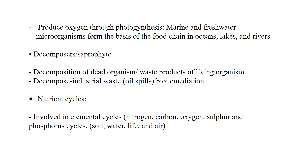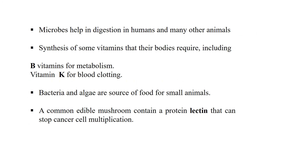Microorganisms help in nutrient cycles: the carbon cycle, phosphorus cycle, sulfur cycle, and nitrogen cycle. These elemental cycles — carbon, nitrogen, oxygen, sulfur, and phosphorus — circulate through soil, water, life, and air. Microorganisms play a key role in these nutrient cycles.